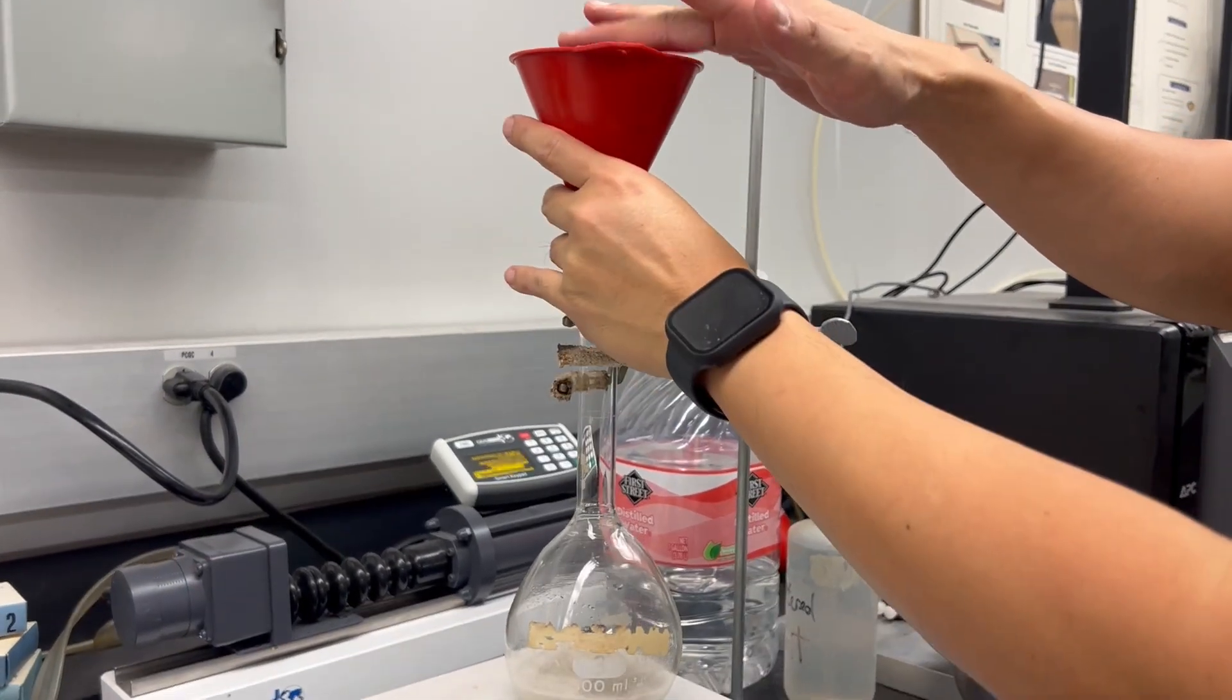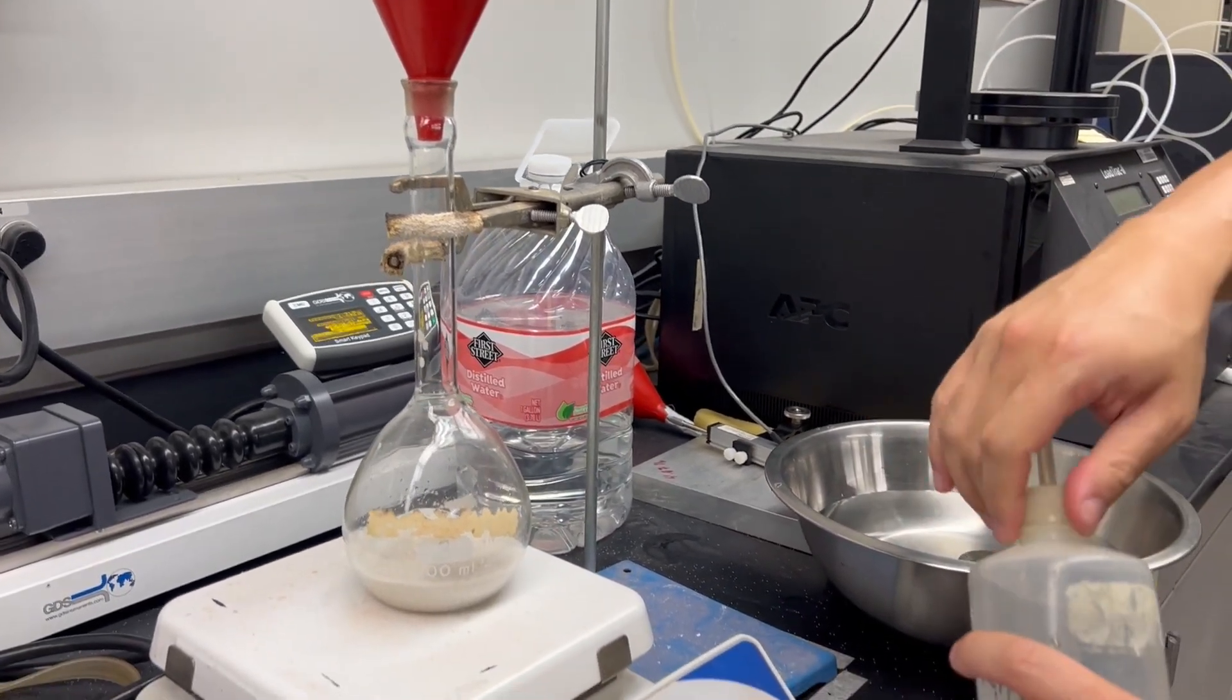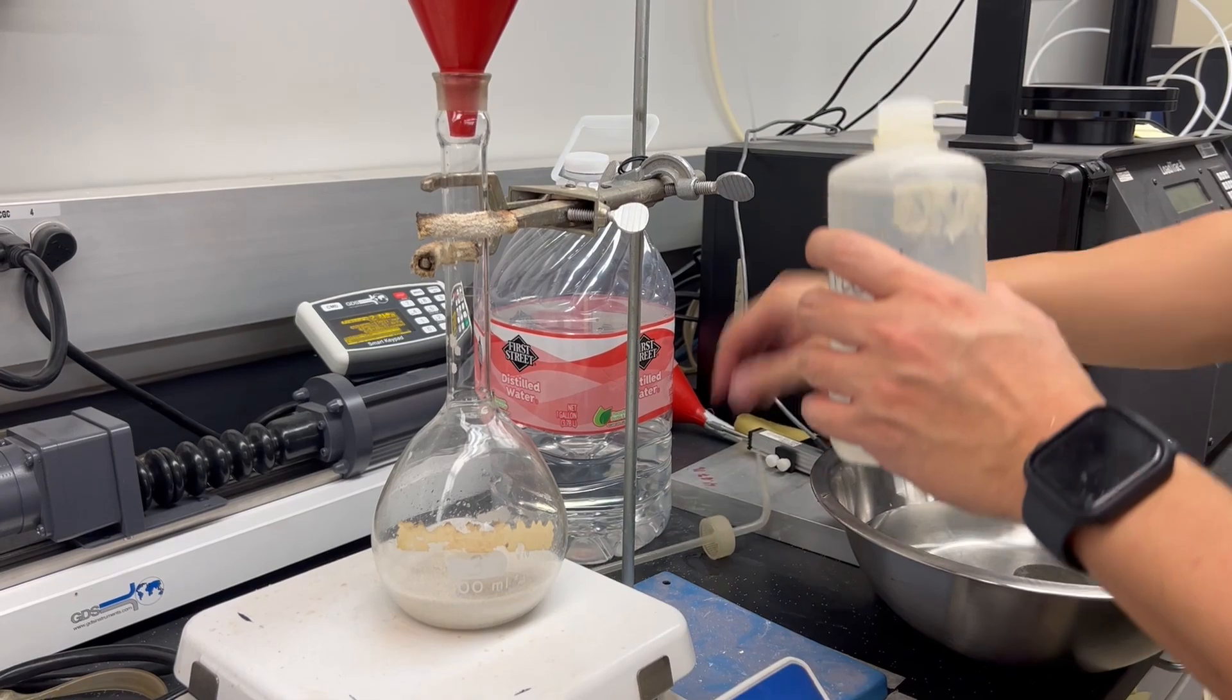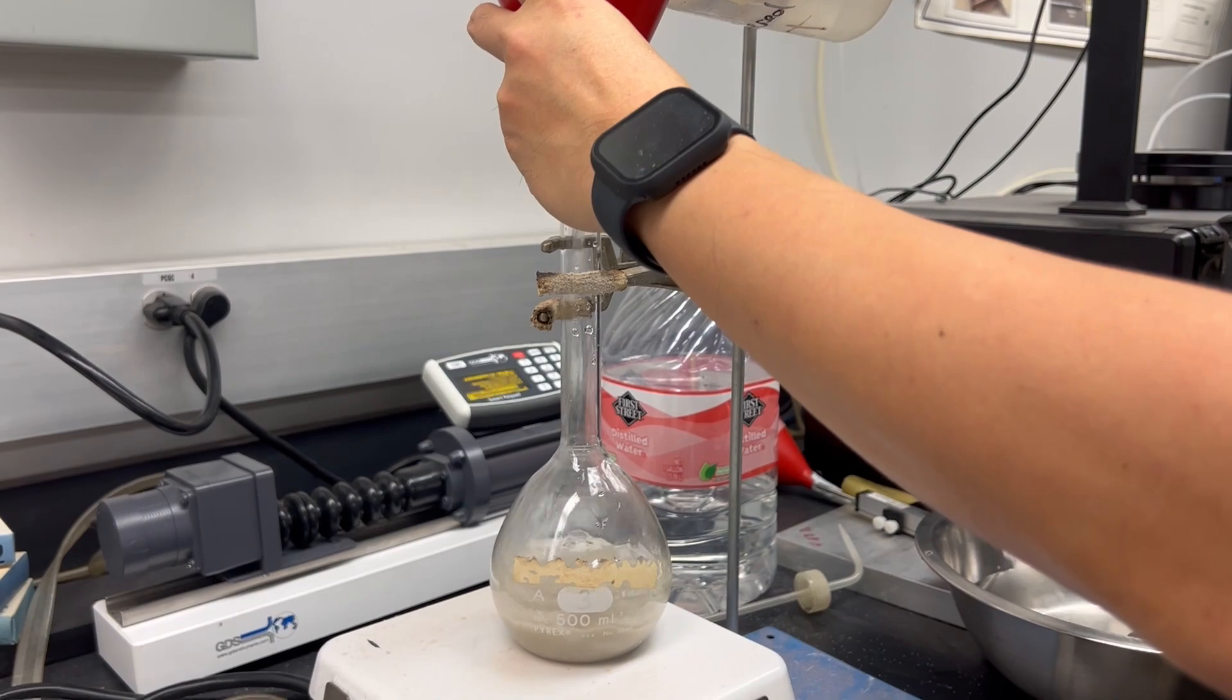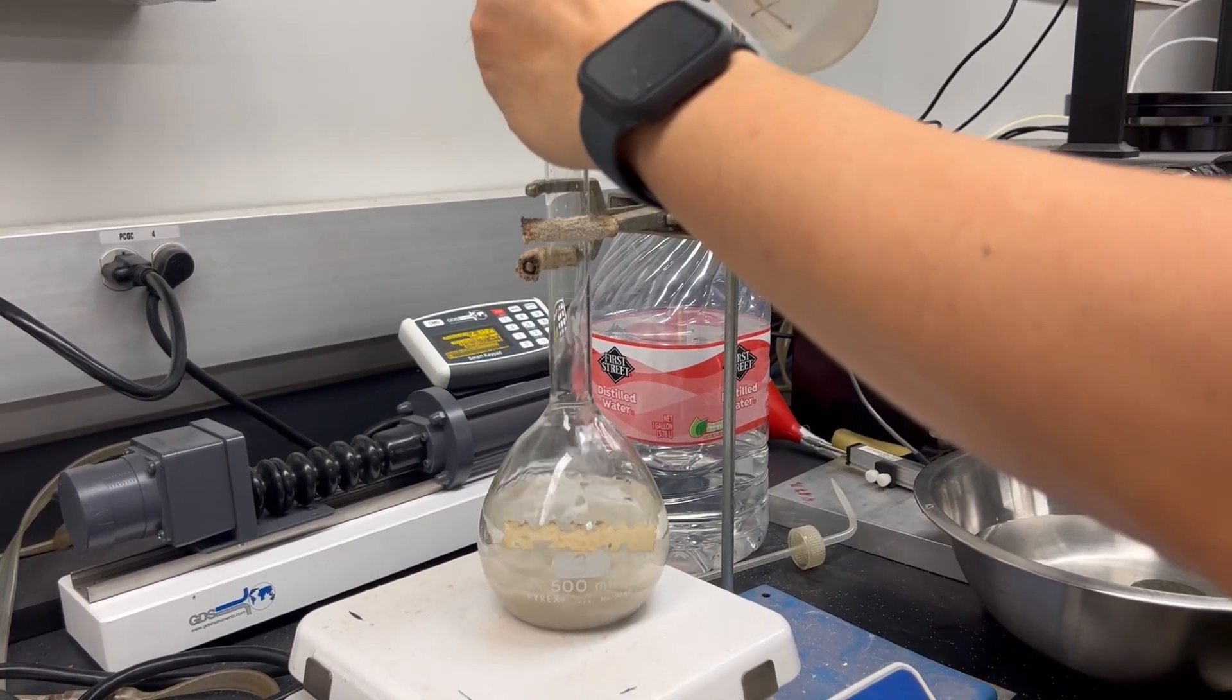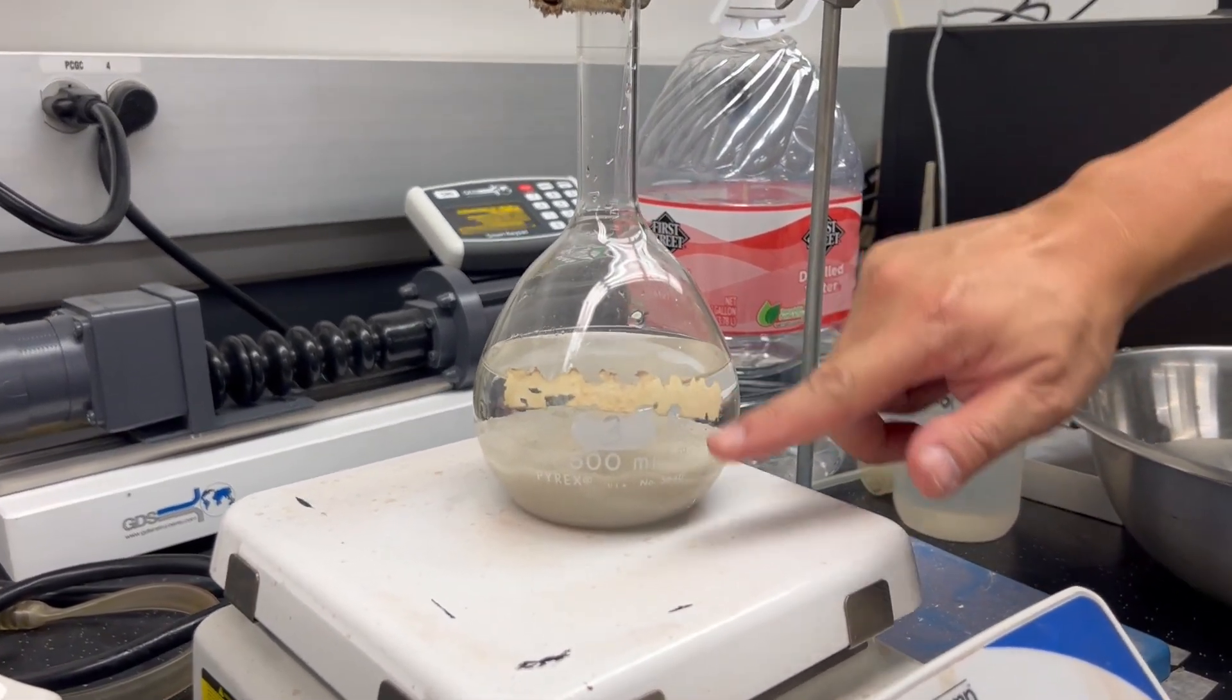So all the sand should go in. Then we fill up this volumetric flask with water and we will get to about the level that's about two-thirds from the bottom.